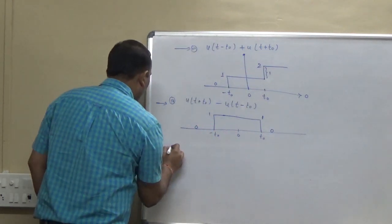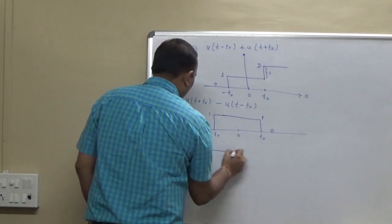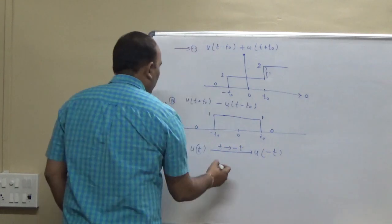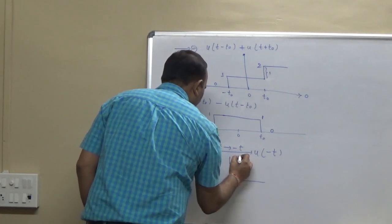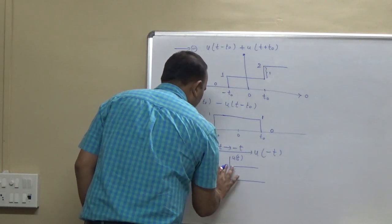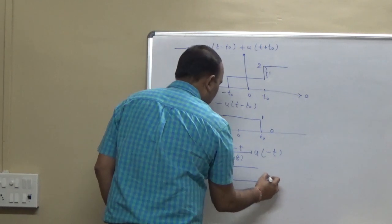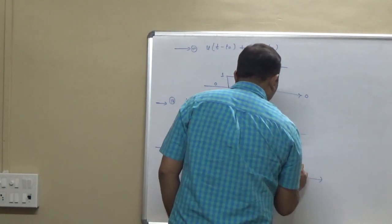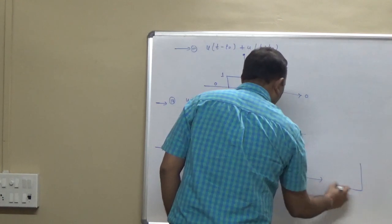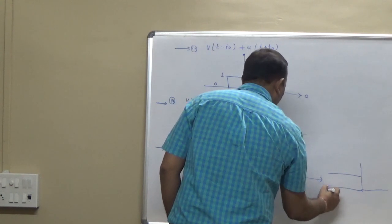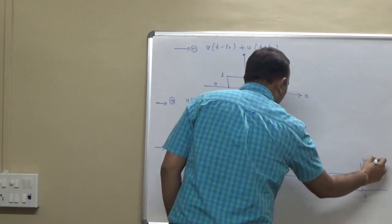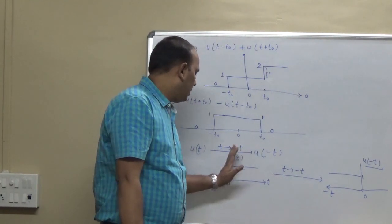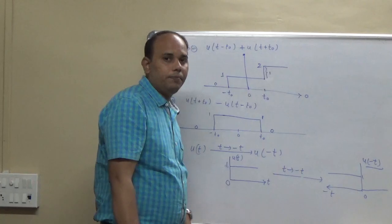The fifth operation is time reversal of u(t), giving u(-t). For u(t), the signal starts at 0 and the amplitude is 1 for t greater than 0. When t is replaced by minus t, the positive side flips to the negative side. So u(-t) is the mirror image of u(t).